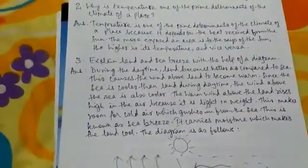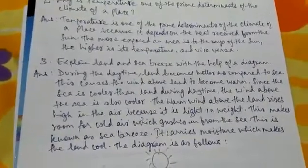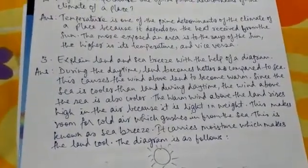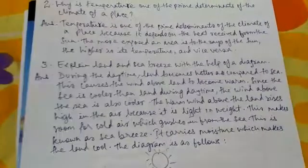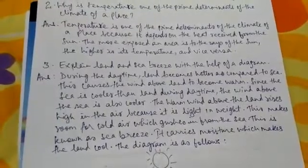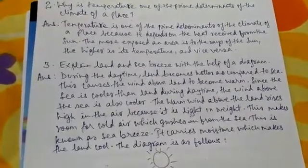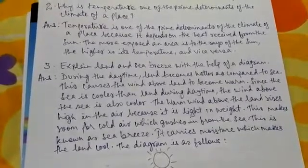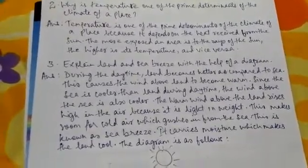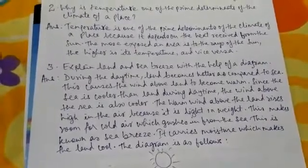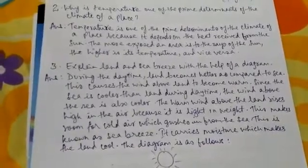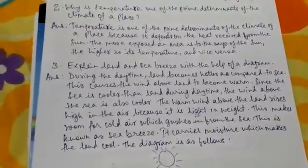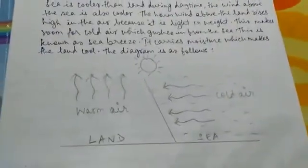Question 3: Explain land and sea breeze with the help of a diagram. During the daytime, land becomes hotter as compared to sea. This causes the wind above land to become warm. Since the sea is cooler than land during daytime, the wind above the sea is also cooler. The warm wind above the land rises high in the air because it is light in weight, making room for cold air which gushes in from the sea. This is known as sea breeze. It carries moisture which makes the land cool. The diagram is shown here — please see it.